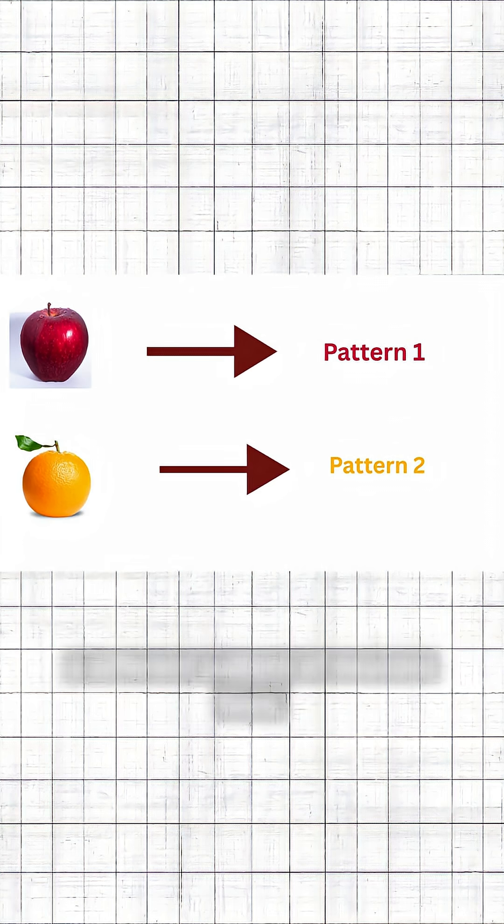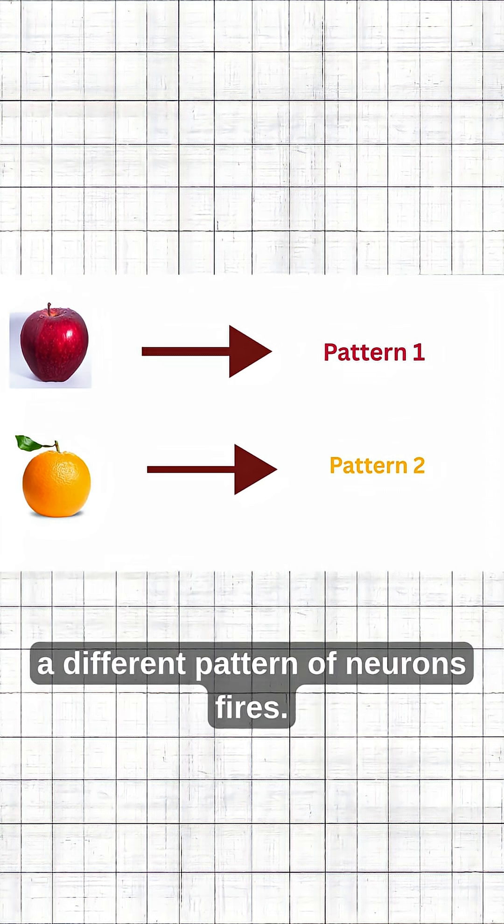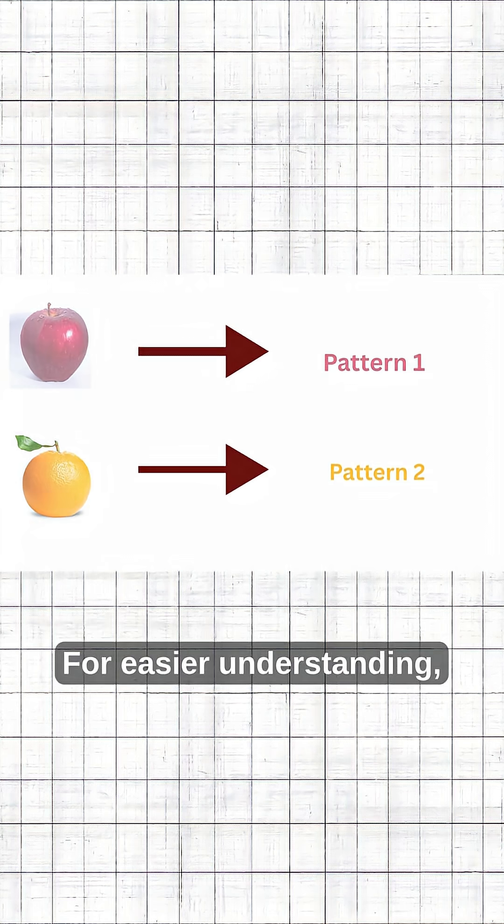If you see an orange instead, a different pattern of neurons fires. A different blueprint.